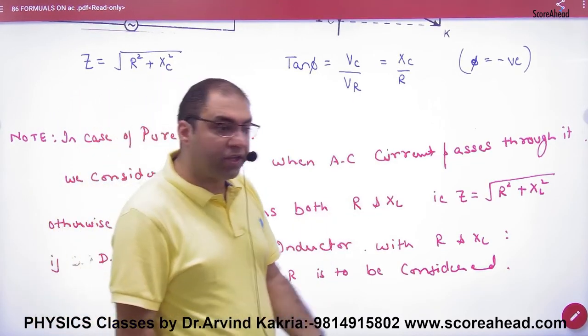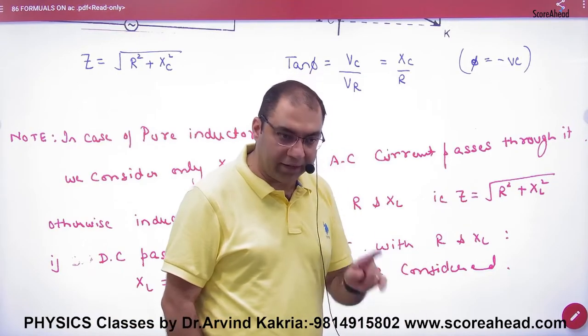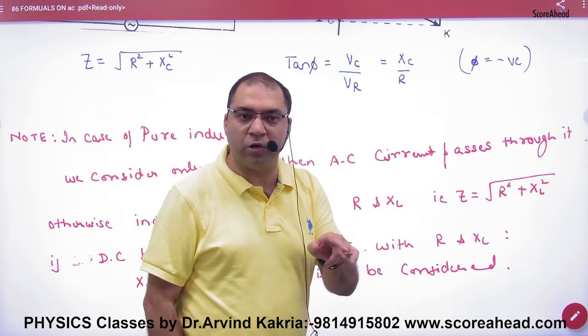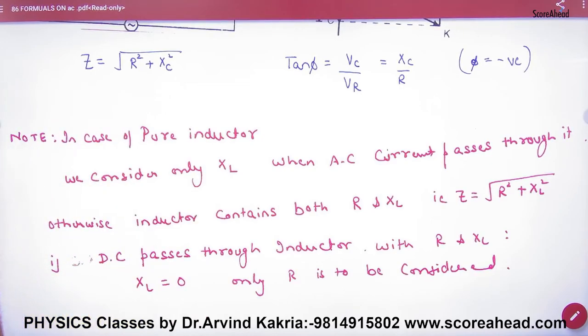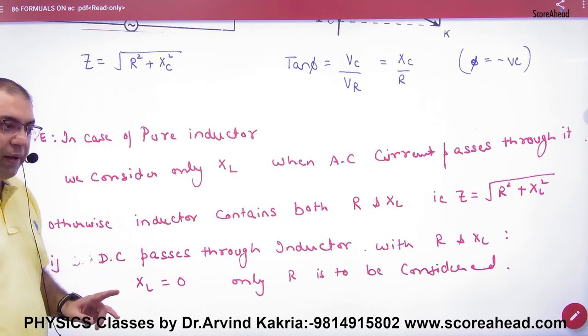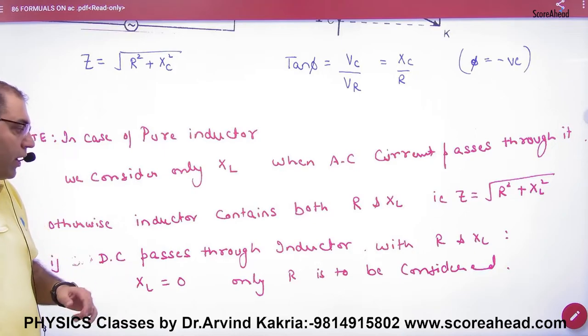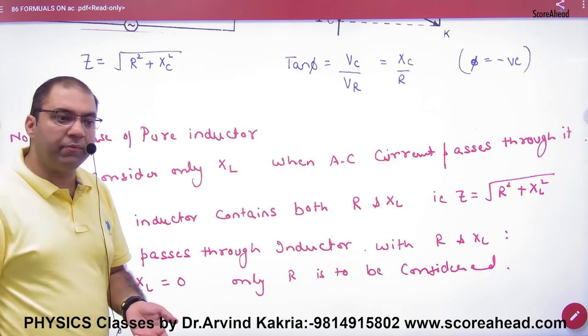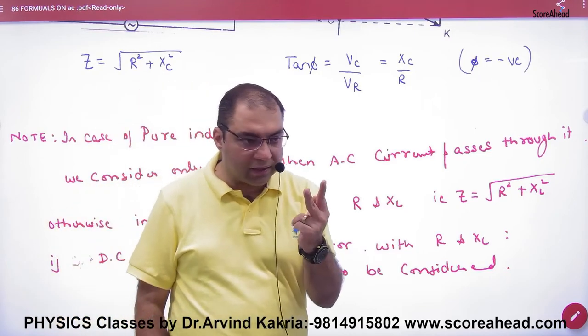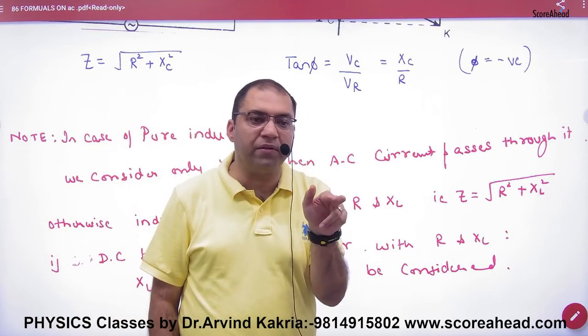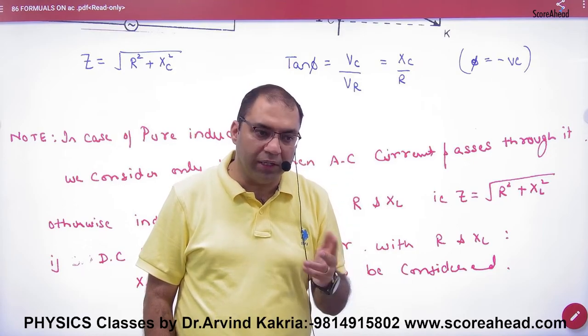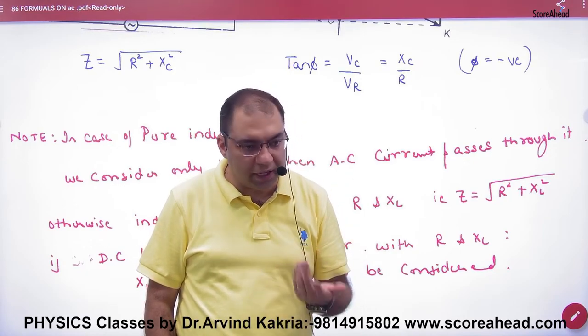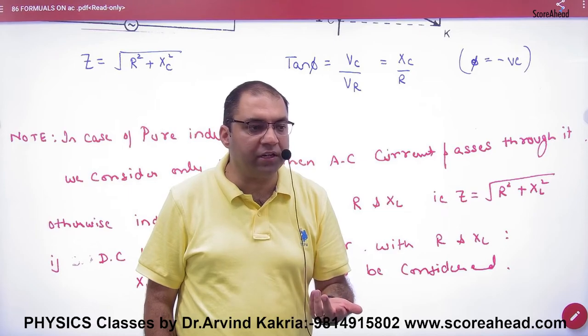Then what does total resistance mean? Impedance Z. That is under root of R square plus XL square. If a pure inductor does not have to. So if a DC current will pass in the inductor, and think that it is not pure inductor. What is in pure inductor? R and XL. So when DC current will pass in this inductor, then DC XL is zero. DC current when we pass in it, then XL doesn't have to be. So what will save? R saves.